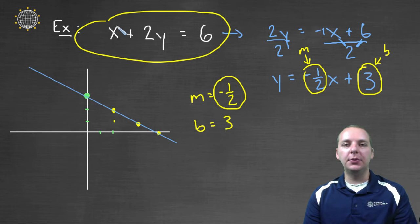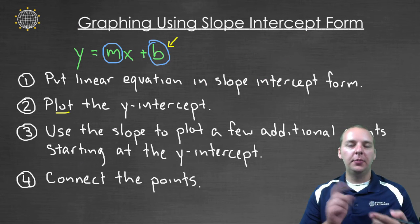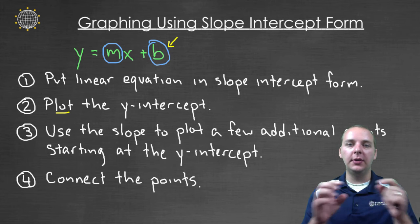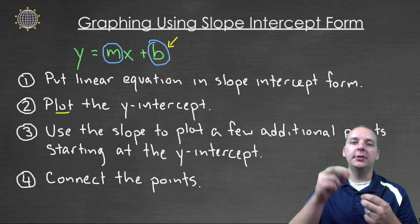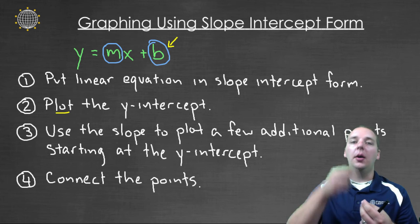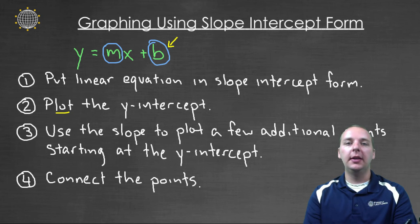So again, these steps are pretty straightforward. I would encourage you to practice them a lot. But just to repeat one last time, put your linear equation in slope intercept form, y equals mx plus b. Start by plotting your y intercept. And then get to some additional points by going up a certain amount, and over a certain amount based off of what your slope is. And then when you're done, connect the dots to get the graph of your linear equation.